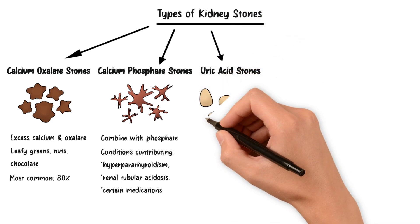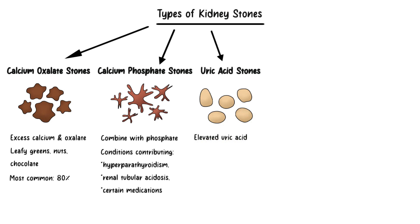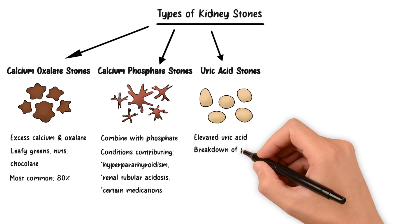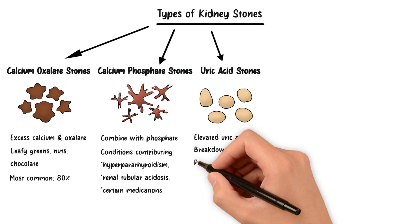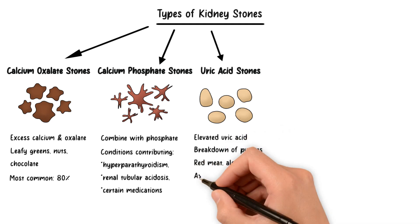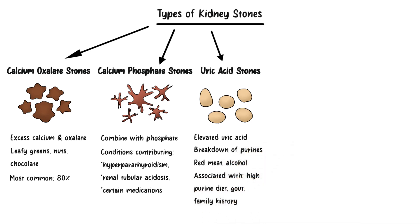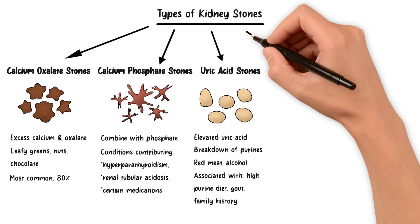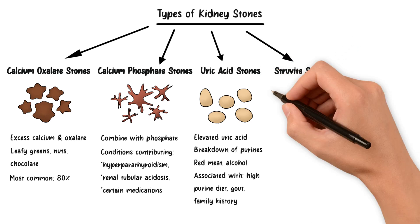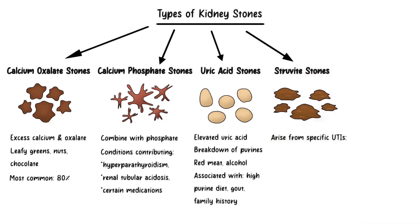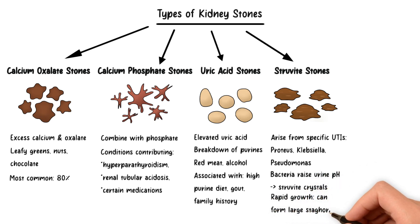Moving on, we have uric acid stones, which form due to elevated levels of uric acid in the urine. Uric acid is a waste product created when the body breaks down purines, found in certain foods and drinks such as red meat and alcohol. These stones can be associated with a diet high in purines, certain medical conditions like gout, or a family history of uric acid stone formation. Struvite stones, also known as infection stones, develop when there is a urinary tract infection caused by specific bacteria — usually urea-producing bacteria like Proteus, Klebsiella, or Pseudomonas. These bacteria can raise the urine pH and promote the formation of struvite crystals. These stones can grow rapidly and often become quite large, occupying a large portion of the renal pelvis and calyces, causing staghorn calculi.